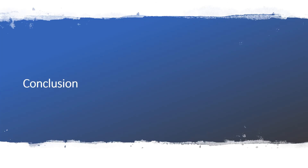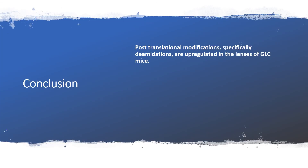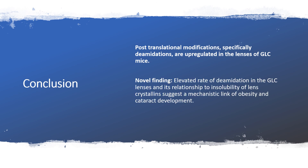In conclusion, post-translational modifications — specifically deamidations — are upregulated in the lenses of our glucose mice. Our novel findings included elevated rates of deamidation in glucose lenses, and the relationship to insolubility of lens crystallins suggests a mechanistic link between obesity and cataract development. Finally, we want to raise the question: is deamidation truly the cause of cataracts, or could it be an effect?